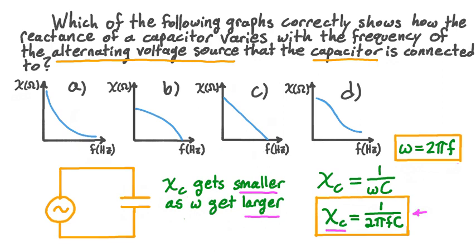If we look back at our formula, we can see that the reactance will always be greater than zero as long as the frequency is finite — the right-hand side of this formula is never zero. Looking back at our graphs, we can eliminate choices B and C because both of these show a reactance that reaches zero at some frequency. Both graphs A and D show a reactance that gets smaller with increasing frequency but never actually reaches zero. As the frequency gets lower and lower, the denominator of this fraction gets smaller and smaller, so the overall fraction gets larger and larger. Since we can make the frequency as close as we want to zero, the capacitive reactance should increase without limit as the frequency approaches zero. Of choices A and D, only choice A shows a reactance that appears to be increasing without limit for very low frequencies, while graph D appears to taper off. So the correct answer is the graph shown in choice A.